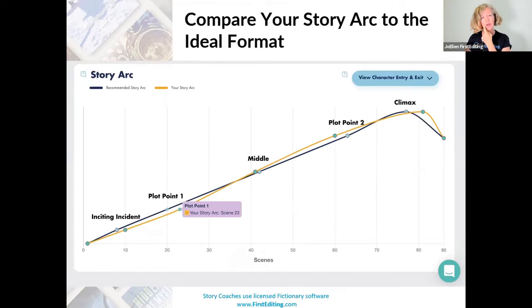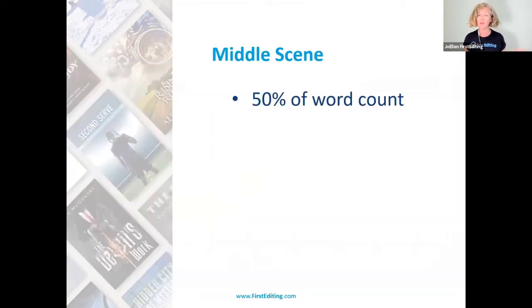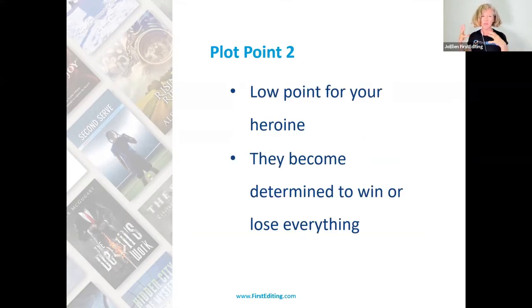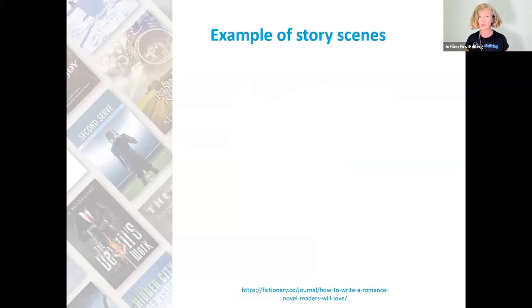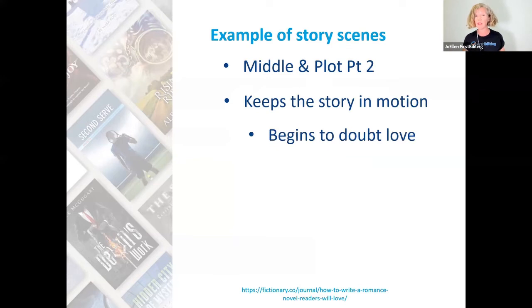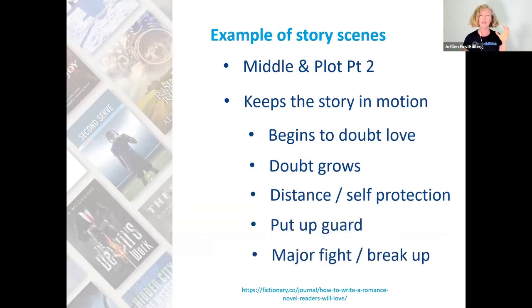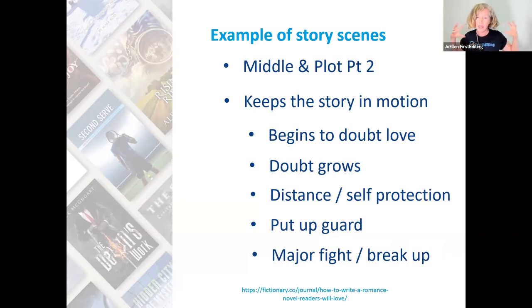The middle is about 50% of all the words you're writing — 25% from plot point one to the middle, and 25% from the middle to plot point two. Moving toward plot point two is your low point. It's where your characters are determined to win or lose everything, but it is a really low point — they're struggling. They begin to doubt their love, the doubt keeps growing, they start distancing from one another. There's a major fight, a breakup, whatever it may be. You're building tension on that story arc.